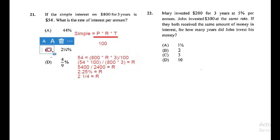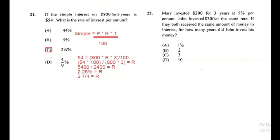Question 22: Mary invested $200 for 3 years at 5% per annum. John invested $300 at the same rate of 5%. If they both receive the same amount of interest, for how many years did John invest his money? I've given you everything for Mary, so you can find Mary's interest first.